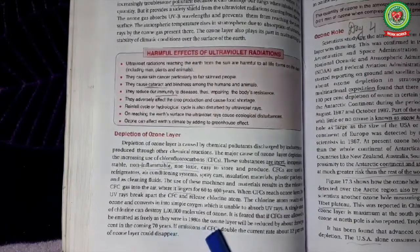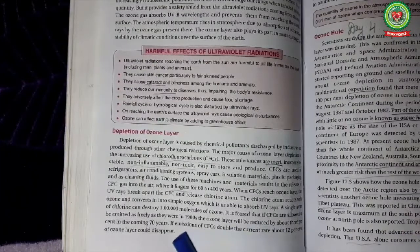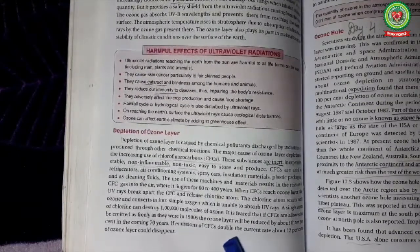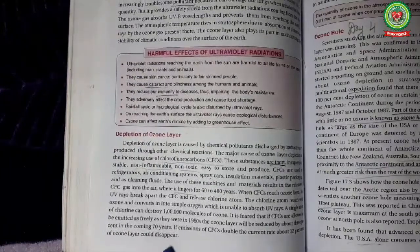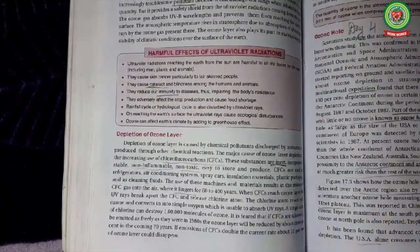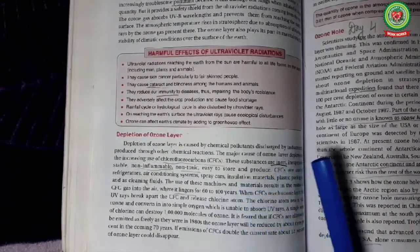It is said that if the CFC is allowed to emit as freely as it was in 1980s, the ozone layer will be reduced by about 3% in the coming 70 years. If the emission of CFC doubles the current rate, about 12% of the ozone layer will be depleted. So we must control the release of chlorofluorocarbons in the atmosphere.